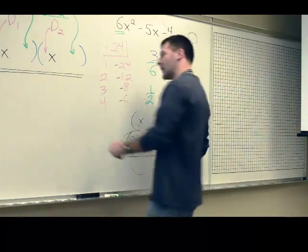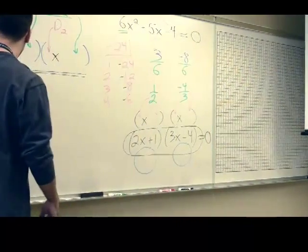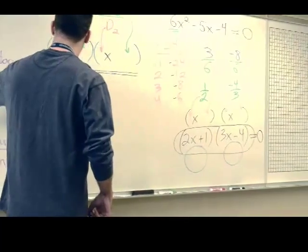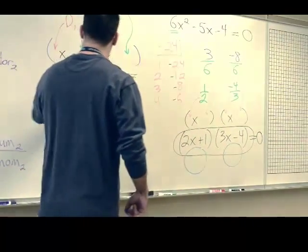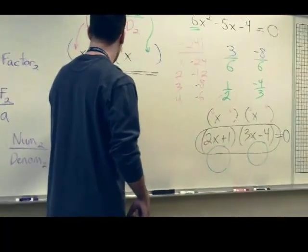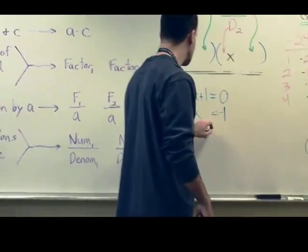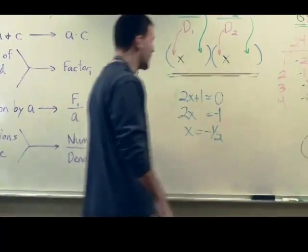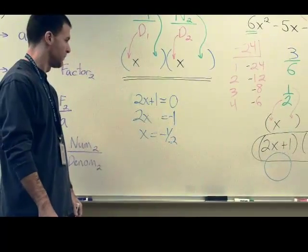Bring these over to here. 2x plus 1 equals 0. We subtract 1 from both sides, and divide by 2. So, negative 1 half.